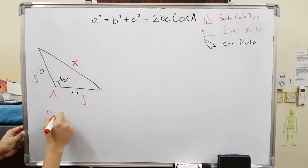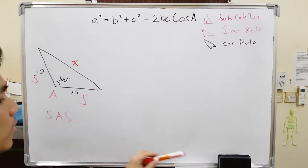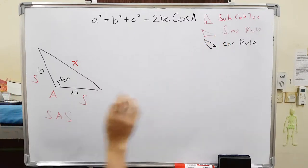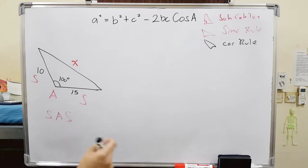Or basically, if you are given the side, the angle, and the side. We are going to use cosine rule because the Sokatoa is not applicable. This is not a right triangle. Sine rule is not applicable. If you try it, it won't work.